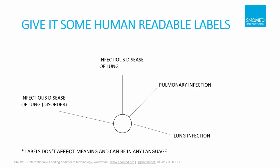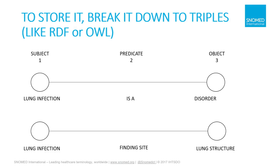When you have a thought connected to other thoughts, you can break that down so that you have a thought — lung infection — is a disorder. This is called a triplet. You can also say that lung infection has a finding site, which is lung structure. This is another triplet. The reason I show this is because this is one common way to take the knowledge of SNOMED, and even clinical knowledge, and store it on computers so that it can be analyzed and looked at.